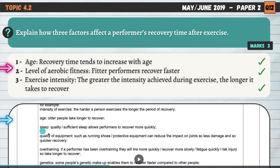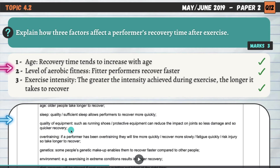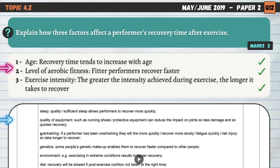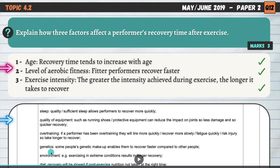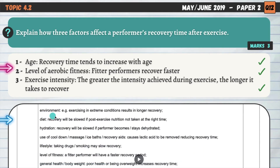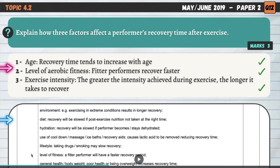Other factors that affect recovery time include: age, sleep quality, quality of equipment such as running shoes — inappropriate footwear may create more damage to joints and connective tissues, leading to a longer recovery period. Overtraining means a performer will tire more quickly. Genetics — some people naturally take longer to recover due to inherited traits. Environment, diet, hydration, use of a cool down, lifestyle, level of fitness, and general health or body weight — poor health or being overweight tends to increase recovery time.